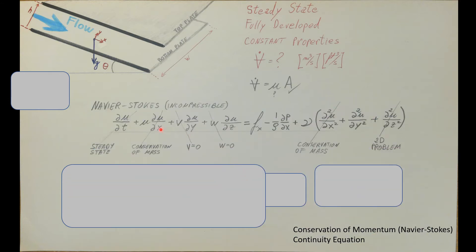Conservation of momentum, otherwise known as the Navier-Stokes equations. This is the incompressible form, because they told us constant properties — density, viscosity and such. Here is this long formula. We're going to cancel out a bunch of things, but we need valid reasons for crossing them out. First, they told us steady state, so that means no change with respect to time. There's only one term dependent on time — the very first one — and since there's no change with respect to time, we can cross it out.